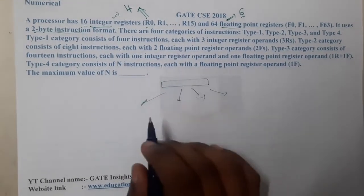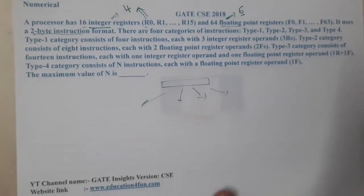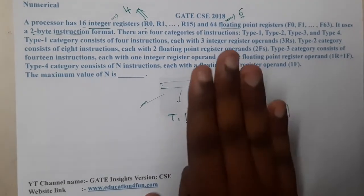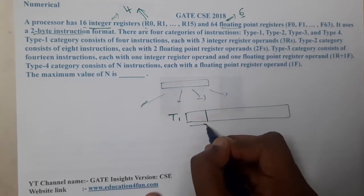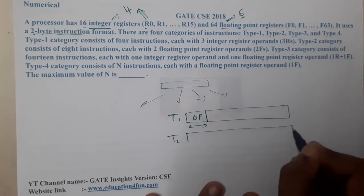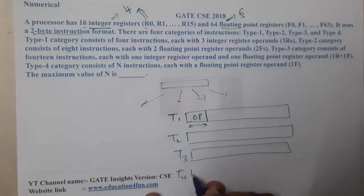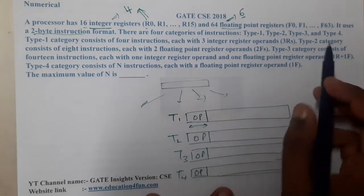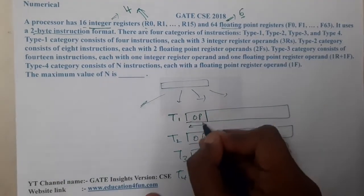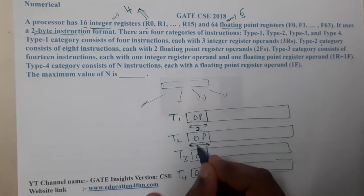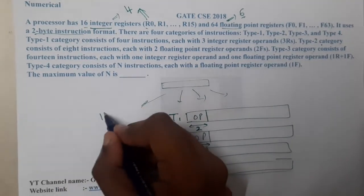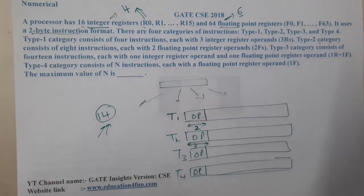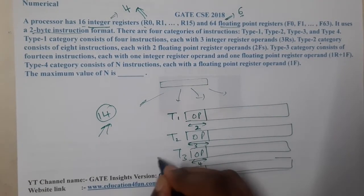Let me draw the instruction types one below the other. For Type 1, there are 4 instructions, so we need 2 bits for the opcode. For Type 2, there are 8 instructions, so 3 bits are needed. For Type 3, there are 14 instructions — this value is a bit unusual — so we take 4 bits for now and keep an eye on it.